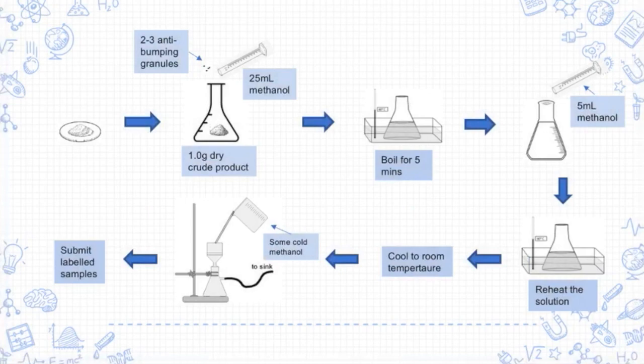Next, 1 gram of the dried crude product, methanol, and 2–3 anti-bumping granules were added to a flask. A small filter funnel was placed in the neck of the flask to serve as a reflux condenser, and the mixture was boiled on a water bath. Methanol was added, the solution was reheated, and then left to cool. Lastly, the crystals were filtered off by suction, washed with some cool methanol, and suction-dried.